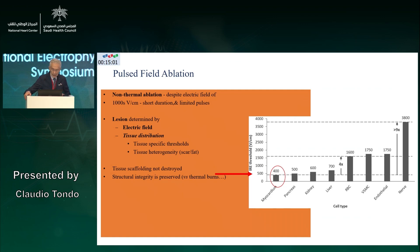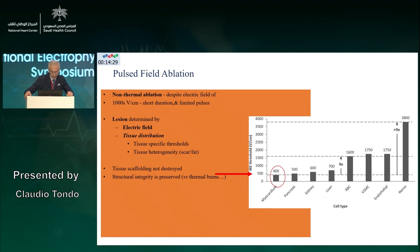An important consideration is the voltage threshold. The voltage required is very low for myocardium, which highlights the specificity of electroporation for myocardium as opposed to other tissues like pancreas, liver, endothelial, or nerve tissue. This explains why we can modulate electroporation without promoting injury to tissue around the heart, like the esophagus, bronchi, and trachea.